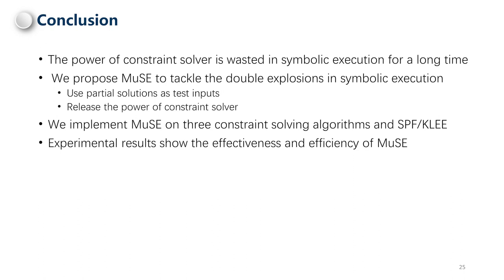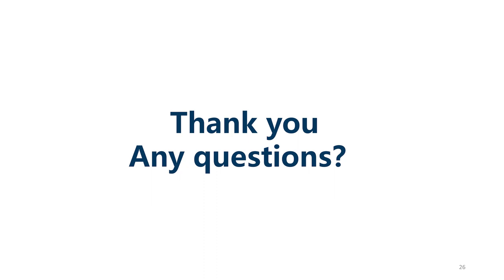In summary, the power of constraint solvers has been wasted in symbolic execution for a long time. We propose MUSE to tackle the double explosions in symbolic execution. We use partial solutions as test inputs to release the power of the constraint solver. We implement MUSE on three constraint-solving algorithms and on SPF and KLEE. Experimental results show that MUSE achieves one or two orders of magnitude speedups on three constraint-solving methods to reach the same code coverage. Thank you. Any questions?